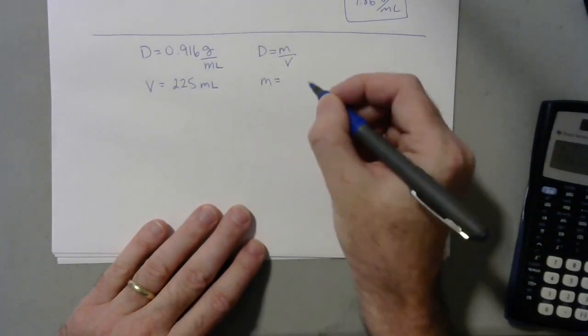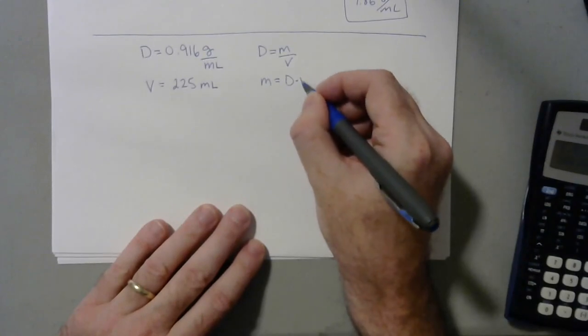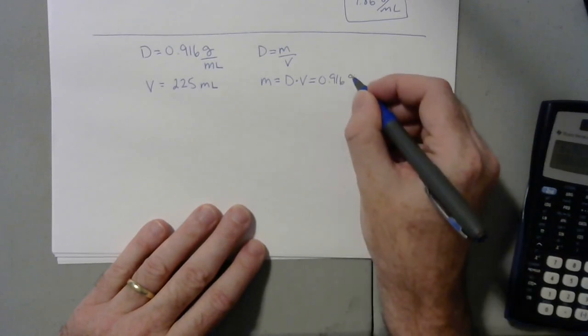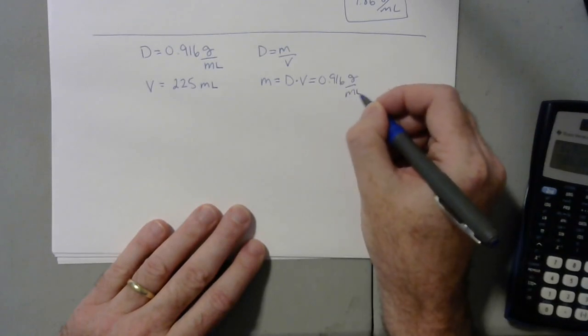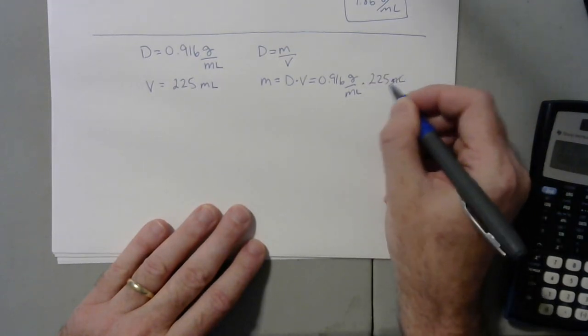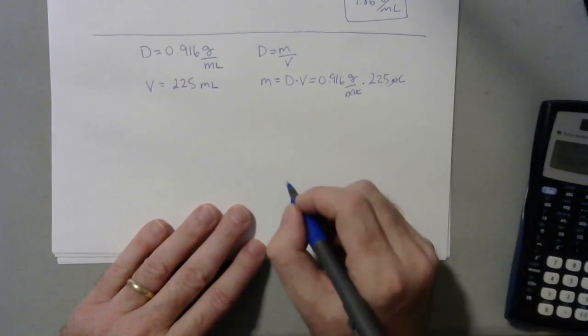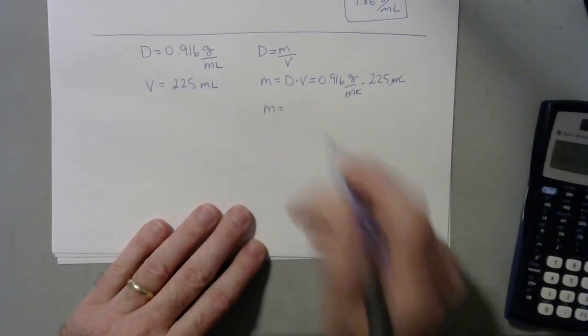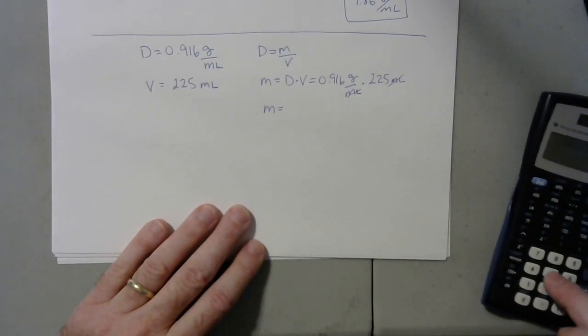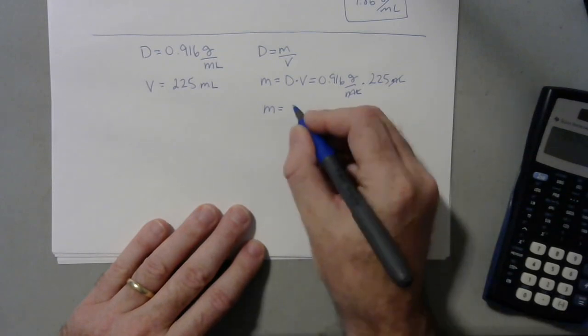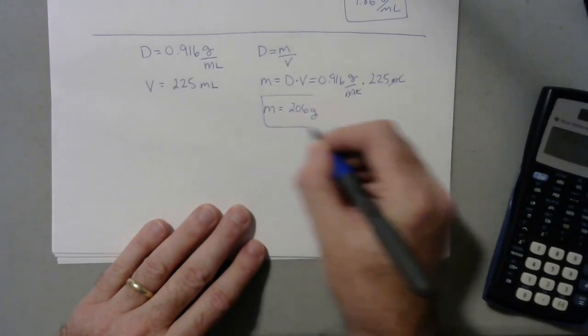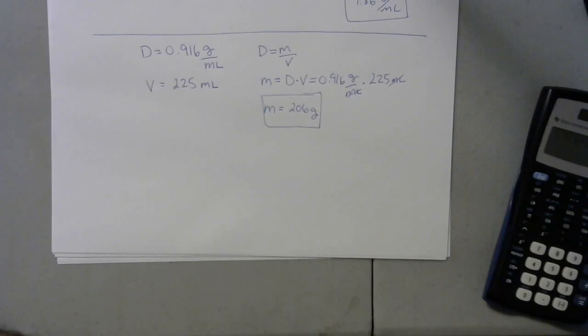So M equals D times V or 0.916 grams per milliliter times 225 milliliters. We can see that the milliliters cancel and our mass would then be running that through our calculator, 206 grams and that would be our answer.